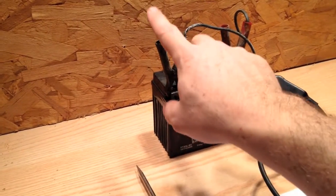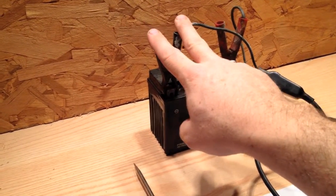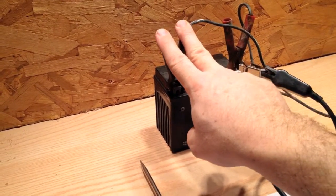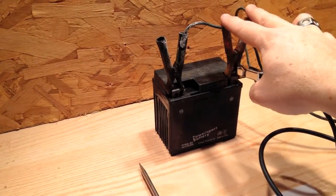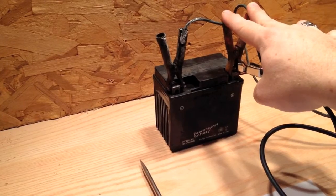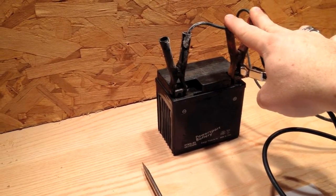If your alligator clip is on the ground or the negative, you're looking for power. If your alligator clip is on the power side of the battery, the positive, you're looking for grounds.